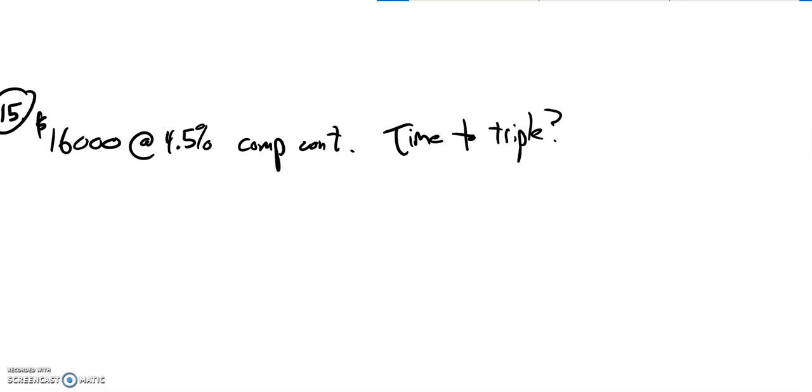Math 141 exam practice 2, problem number 15. We are given some amount of money at a certain percent, compounded continuously. We know how long it's going to take to triple, so we're finding T.